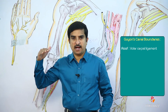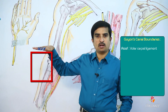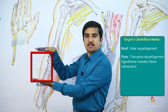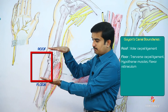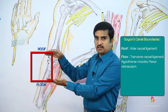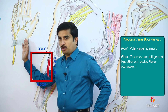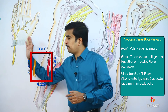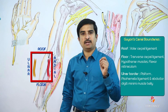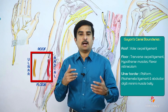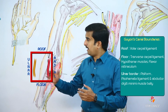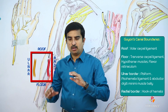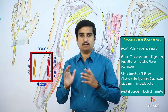The Guyon's Canal has the following boundaries. The roof is formed by the volar carpal ligament. The floor is formed by the transverse carpal ligament, the hypothenar muscles, and the flexor retinaculum. The ulnar border is formed by the pisiform, the pisohamate ligament, and the abductor digiti minimi belly. The radial border is mainly formed by the hook of hamate.